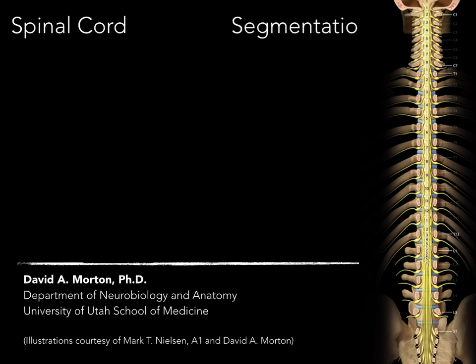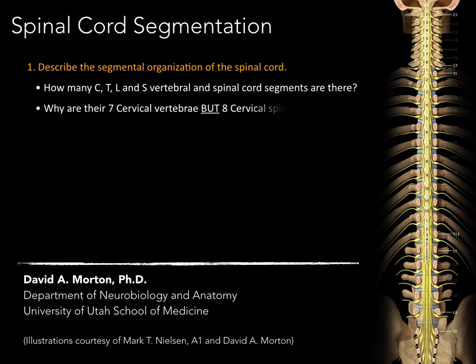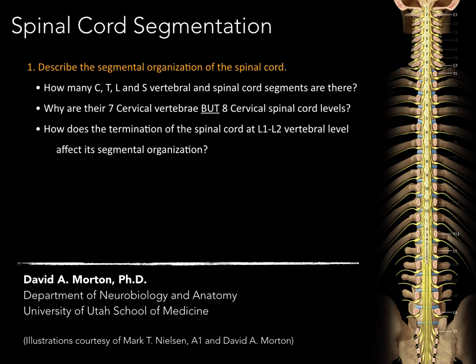This spinal cord tutorial focuses on the principle of segmentation. Our objective is to describe the segmental organization of the spinal cord by answering these questions: How many cervical, thoracic, lumbar, and sacral vertebral and spinal cord segments are there? Why are there seven cervical vertebrae but eight cervical spinal cord levels? How does the termination of the spinal cord at the L1-L2 vertebral level affect its segmental organization? Our second objective is to describe vertebral segmental discrepancy.